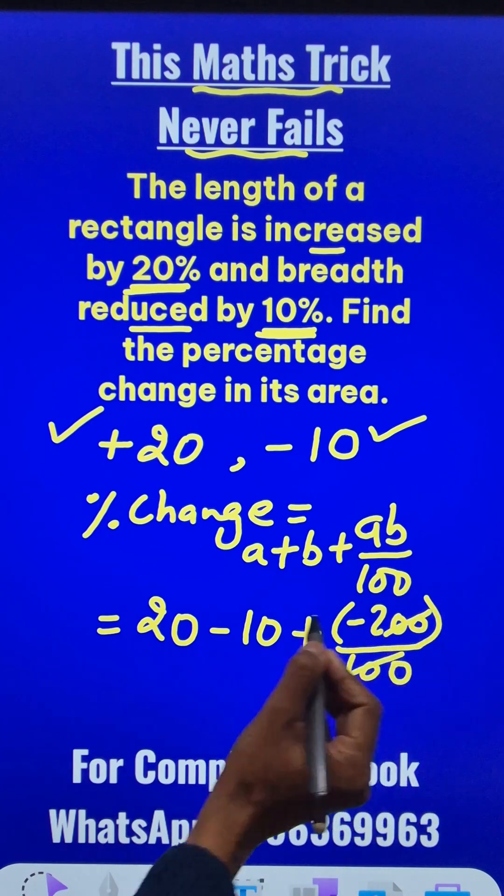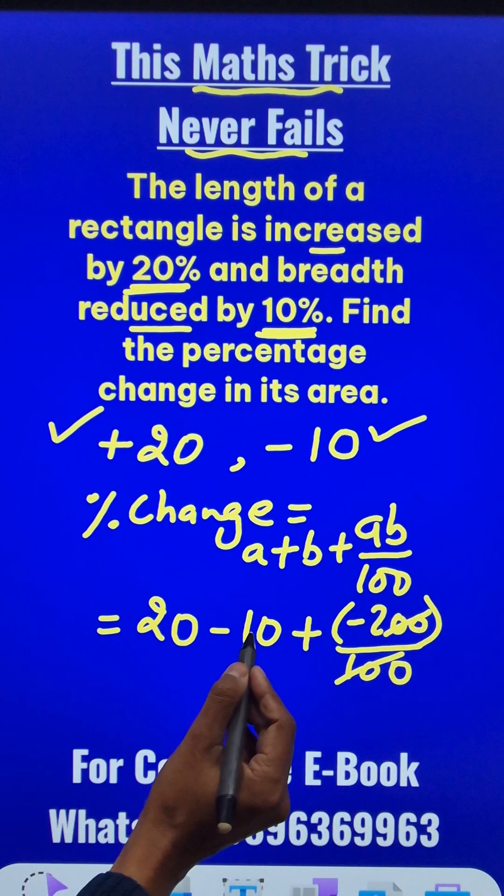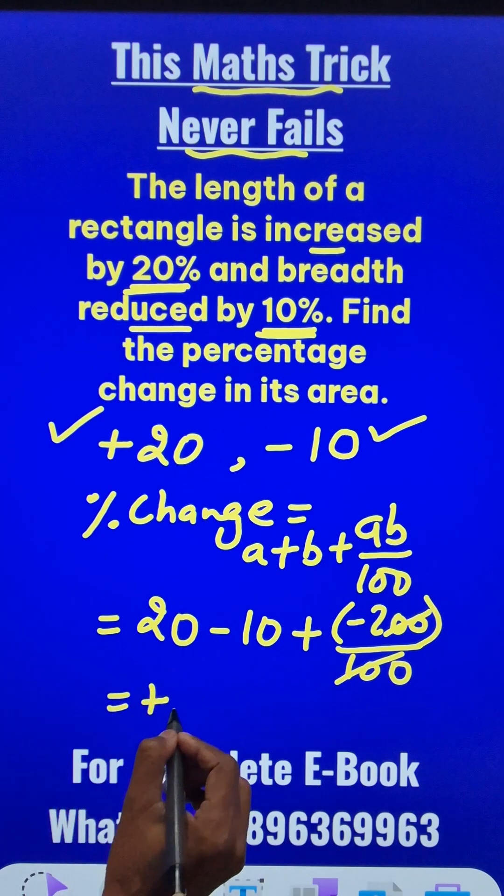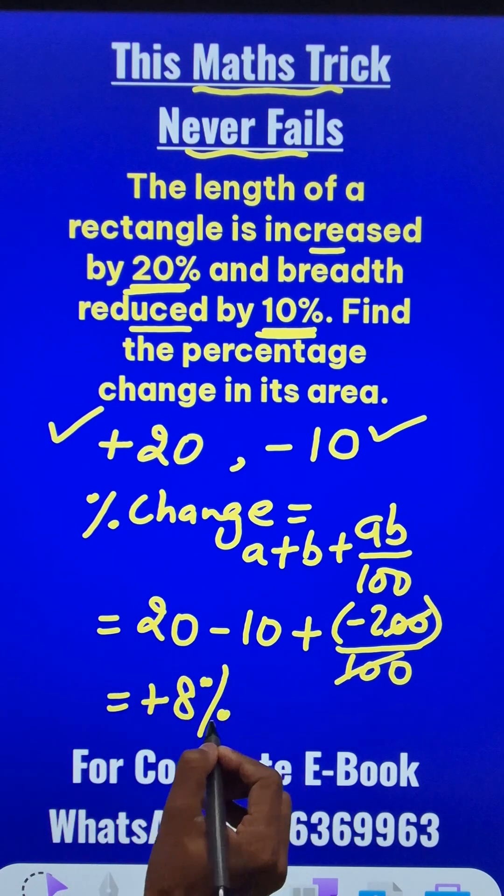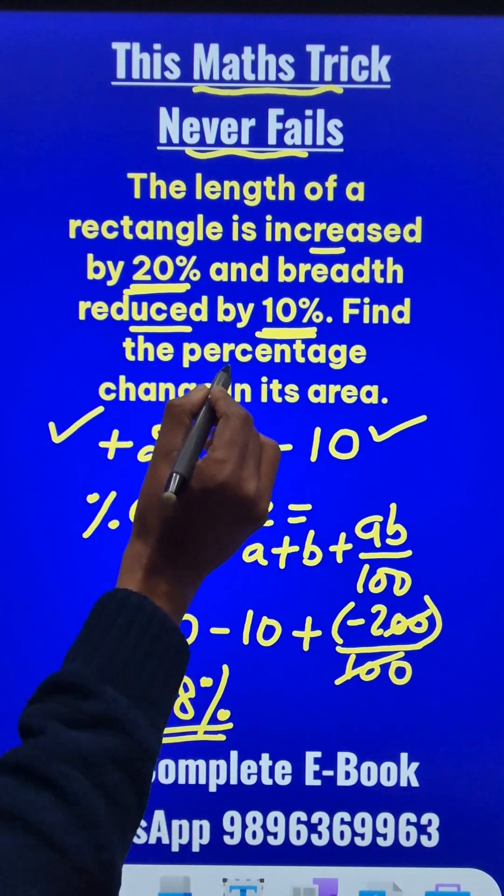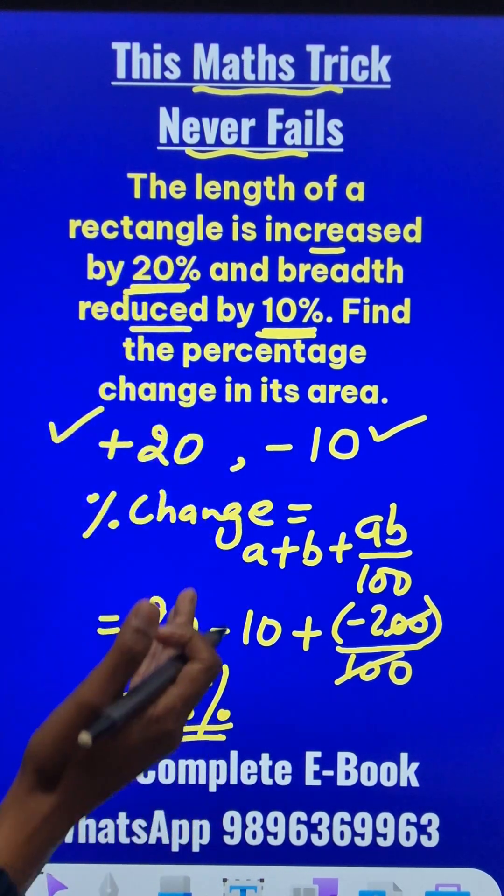So this practically is negative 2. 20 minus 10 is 10, 10 minus 2 is 8 and since 8 is positive, so that means we have 8% increase. The plus sign denotes increase. 8% increase in the area of the rectangle. Isn't that amazing?